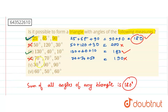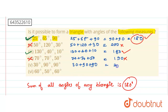The fifth case: 30 plus 90 plus 90. Obviously not possible because 90 plus 90 is 180, and 180 plus 30 is 210. We cannot form a triangle with the help of these three angles.